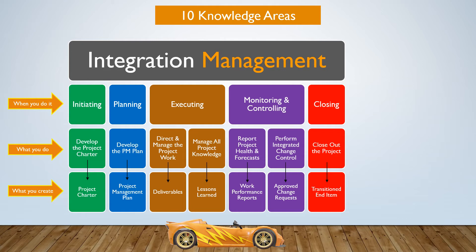Monitoring and controlling the project is all about comparing what you planned to do on the project to what's actually happening. During monitoring and controlling, we need to be able to report on our project health and make forecasts about the future of the project based on what we see happening. We also need to perform integrated change control, which means we're going to experience change on the project — stakeholders will request change, and sometimes change is inevitable as a factor of the environment or project circumstances. We need to make sure that we control that so it doesn't get chaotic. Monitoring and controlling should produce work performance reports and approved change requests.